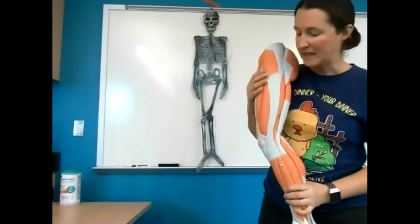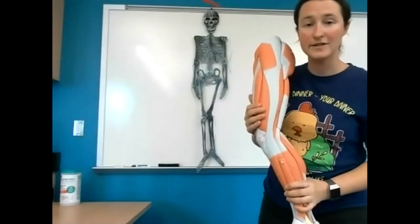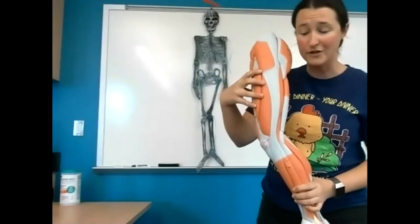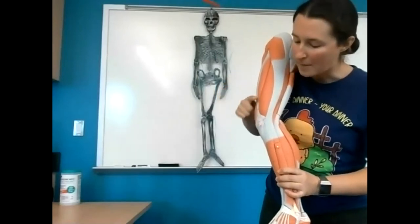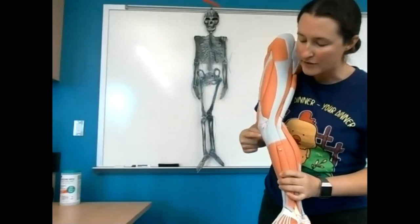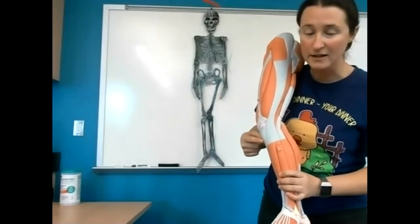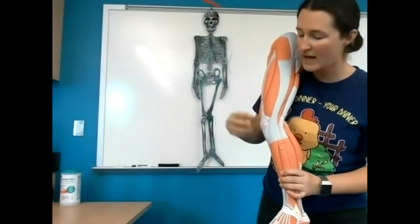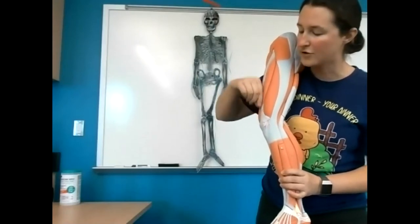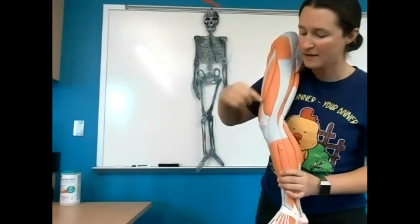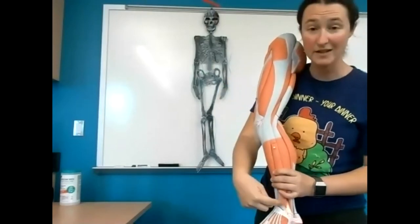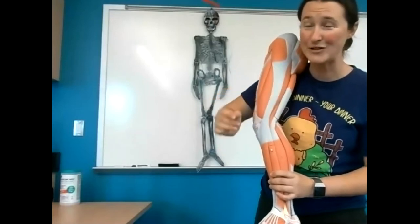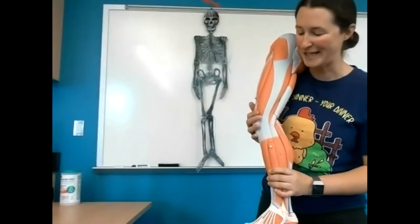There are going to be muscles on the chicken leg that are on the anterior side — those are the quadriceps femoris, the quads of the chicken. These muscles insert lateral to the kneecap or the patella bone. When these muscles shorten, the entire drumstick — the calf — is going to kick out.